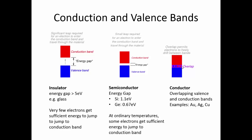For conductors, the overlapping valence and conduction bands make them excellent conductors. The outer valence electron in elements like gold, silver, and copper is free to drift between the valence band and the conduction band, and that's what makes those elements really good conductors.